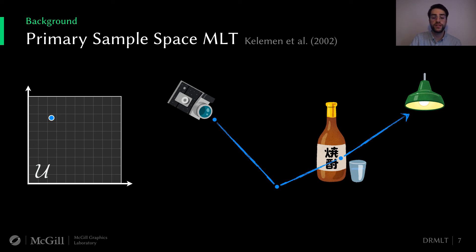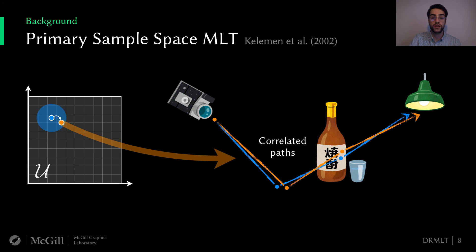PSSMLT starts by sampling a base path, depicted in blue. This path is then modified by perturbation, and a new candidate path is proposed, shown in orange. Based on some acceptance criterion, this candidate is either accepted or rejected, and the process is repeated. This is a fairly straightforward application of the popular Metropolis-Hastings algorithm, but choosing a mutation that can guarantee both local and global exploration of the state space remains an open problem.